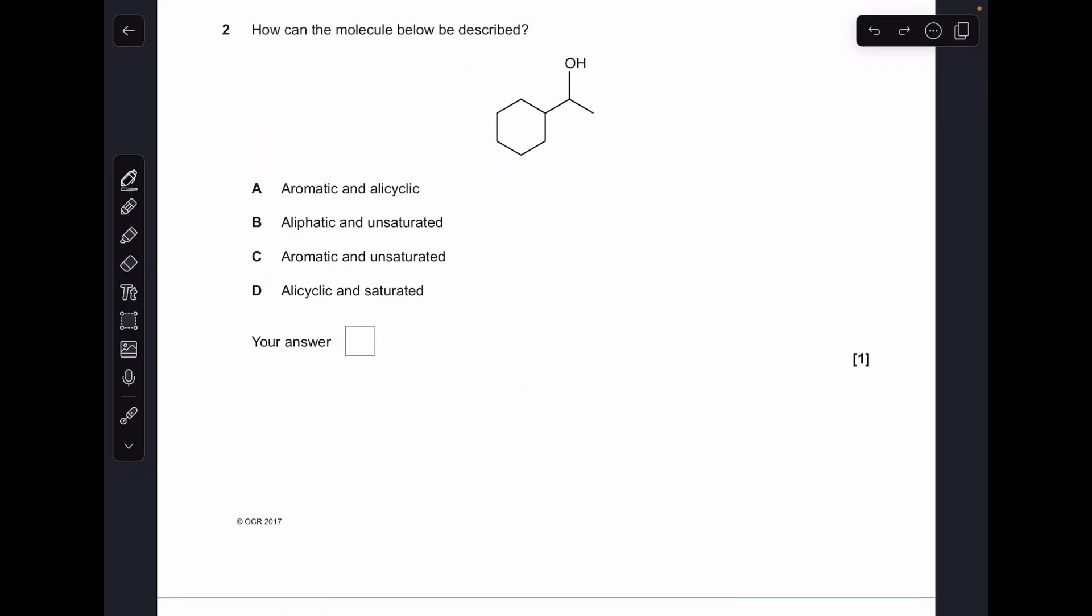Question two. We've got no benzene ring in this molecule at all, so aromatics out straight away. We've got no double bonds, so it's not unsaturated either. So it's alicyclic unsaturated. So D.